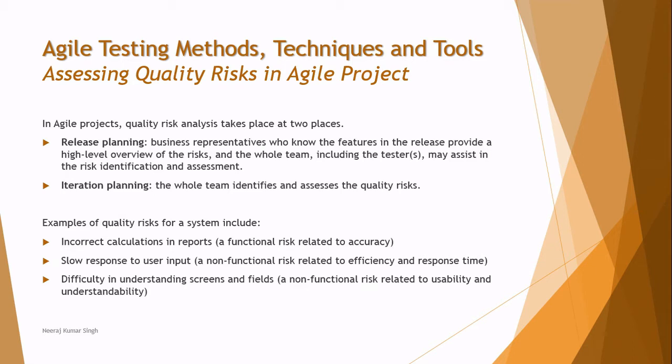In agile methodology, quality risk analysis takes place at two stages: release planning and iteration planning. Release planning covers the overall process — when we start overall planning, the whole team contributes to determine certain risk areas. Iteration planning is where the whole team again identifies and assesses quality risks. In summary, release planning focuses more on project risk, while iteration planning considers quality risk.